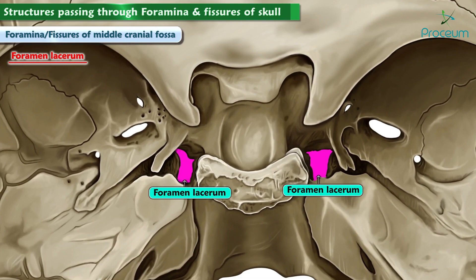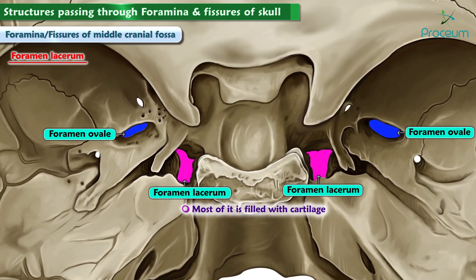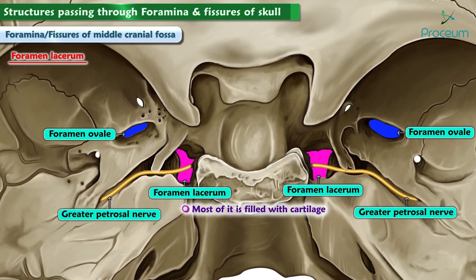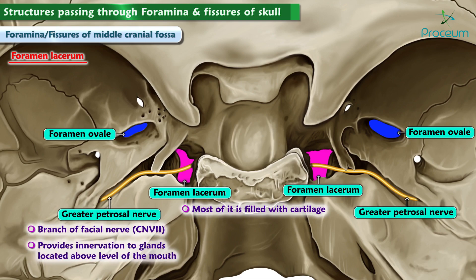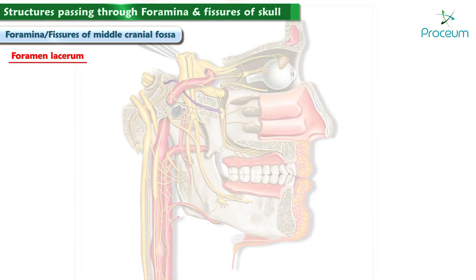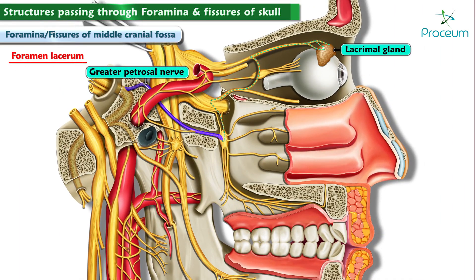Foramen lacerum is located posterior and medial to the foramen ovale, and most of it is filled with cartilage, but still allows passage of the greater petrosal nerve, a branch of the seventh cranial nerve, the facial nerve. It provides innervation to glands located above the level of the mouth, for example the lacrimal glands near the eye, which are associated with tear production.